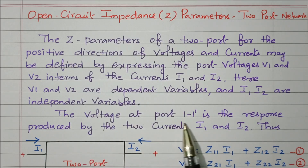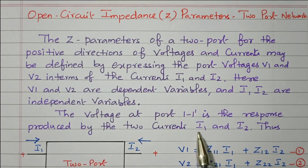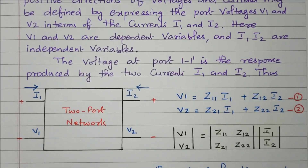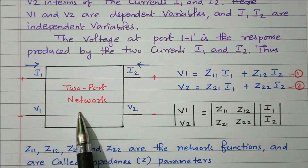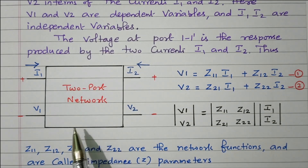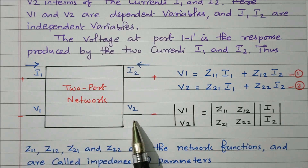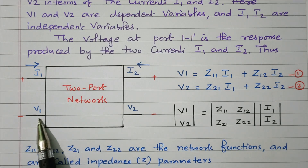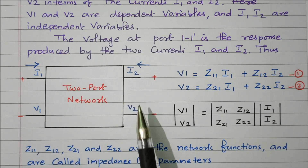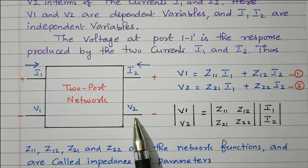The voltage at port 1-1' is the response produced by the two currents I1 and I2. We will refer the two port network circuit diagram, the block diagram. The two port network has an input port and an output port. I1 and V1 refer to the input current and voltage; I2 and V2 refer to the output current and voltage.